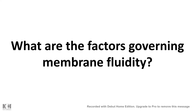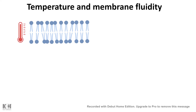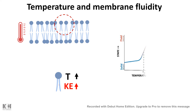Now let's talk about factors that govern membrane fluidity. First, temperature is the most important factor. With increasing temperature, packing of the membrane becomes looser and the membrane becomes more fluid, because higher temperature increases the kinetic energy of each phospholipid molecule, increasing the possibility of mobility. So with increasing temperature, the membrane moves from a solid to a fluid state.